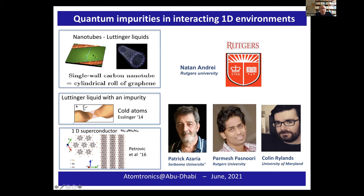I will talk about systems that are typically called Luttinger liquids. These are systems that are realized in a lot of different ways. In particular, nanotubes are an example — these are rolled-up graphene where the direction of motion is enhanced in one dimension. I'll be interested not only in those interacting one dimensional systems, but in impurities in them and how they are modified by those interactions in one dimension.